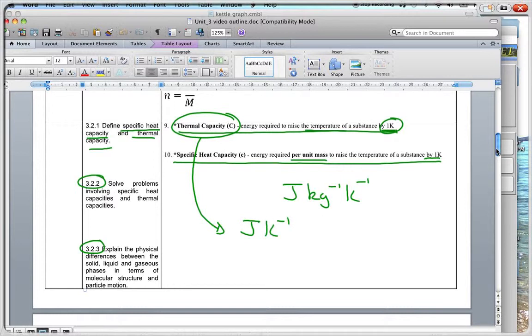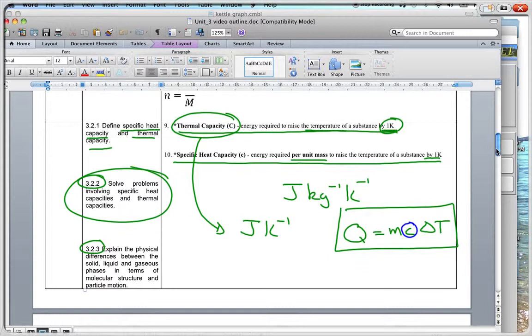Now I have, with other videos and so forth, done a number of problems using the formula, using specific heat capacity and thermal capacity. Remember that your formula that you're going to be dealing with here is that the heat is equal to mc change in temperature. That is when you're dealing with, over here, this is the specific heat capacity. So, the c is the specific heat capacity.